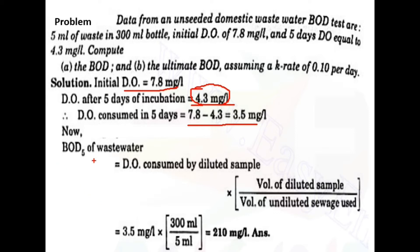Next, we calculate the BOD of the wastewater. The formula is: BOD of wastewater equals DO consumed by diluted sample, multiplied by the volume of diluted sample, divided by the volume of undiluted sewage used. The DO consumed by the diluted sample is 3.5 mg per litre.